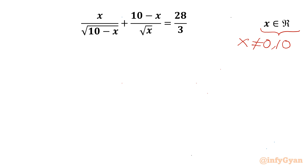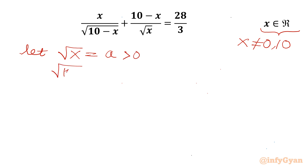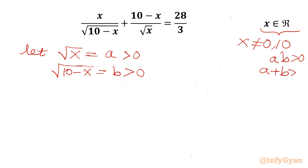Now I will use substitution. Let square root of x equal to a, and square root of (10 minus x) equal to b. For solutions to be real, a should be positive and b should also be positive. So the product of a and b should be positive, and the sum of a and b should also be positive.